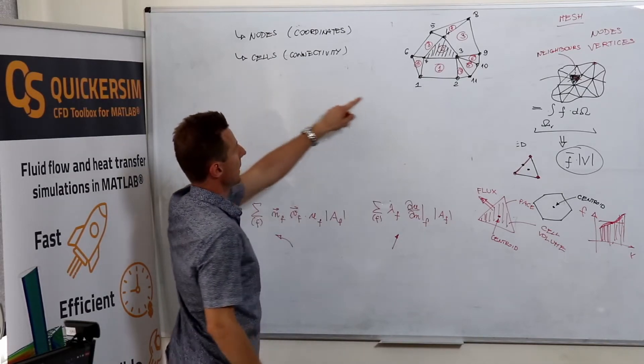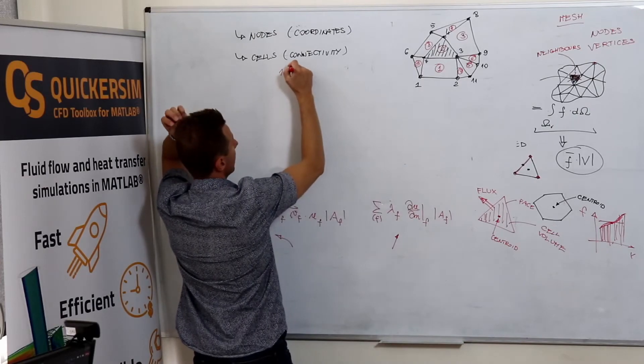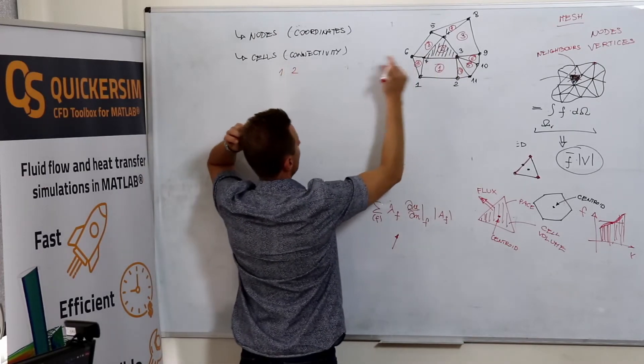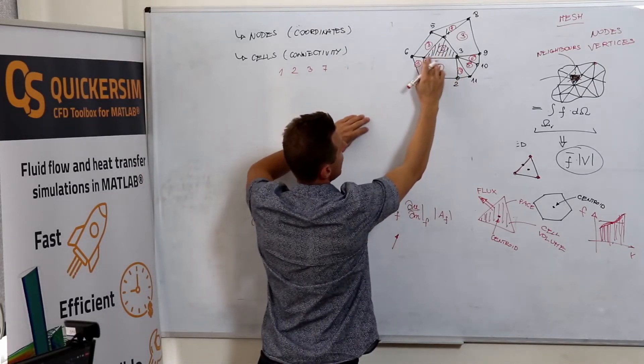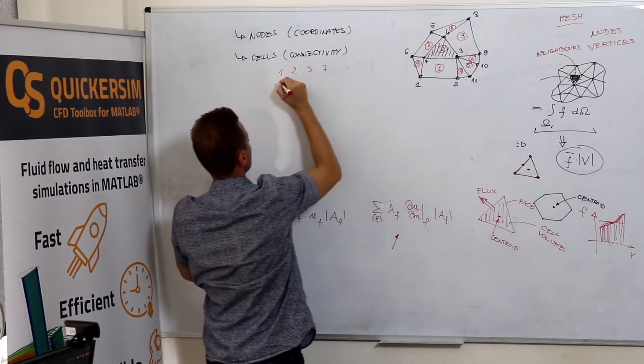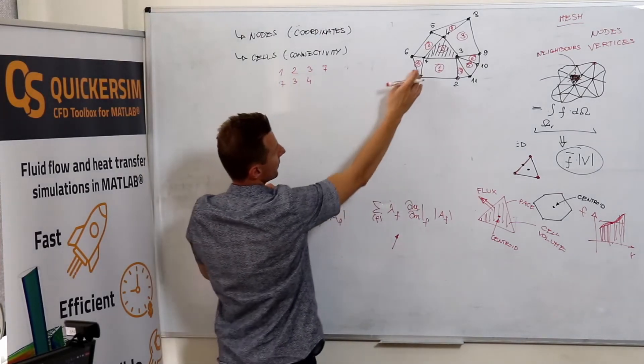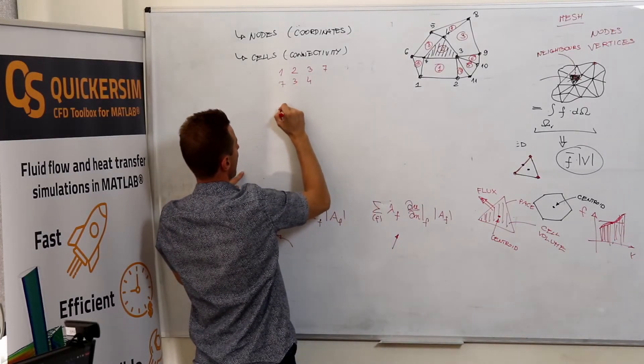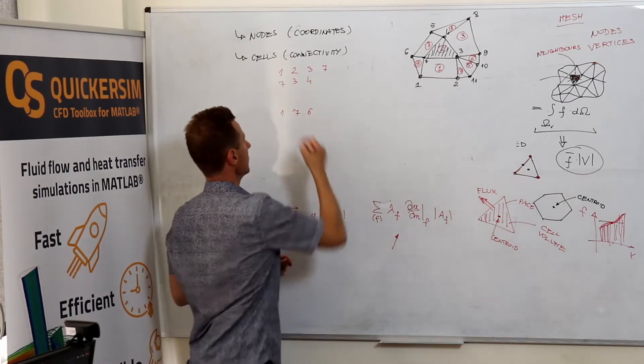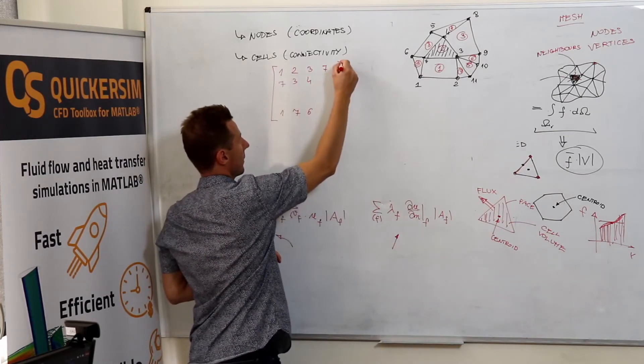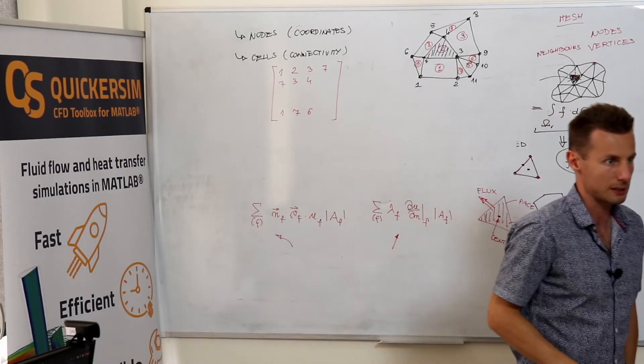So what we would expect is we would expect, for example, something like that. One, two, one, two, three, seven. And then the second one is seven, three, four, et cetera. And the ninth cell would be, for example, one, seven, six. And this is the array that stores the information about connectivity.